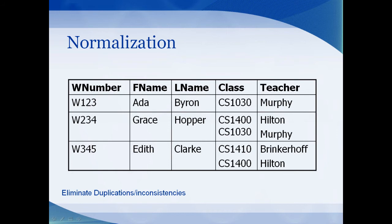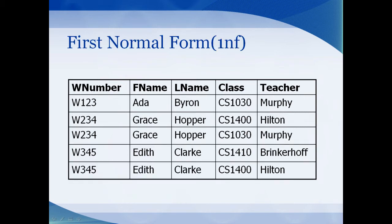Normalizing is just the process of eliminating duplications and inconsistencies in your data. Let's fix this data so it fits into the table — we'll just put each record in and add in the names. This is now what's called First Normal Form, or 1NF. It's the first step in normalizing your data.